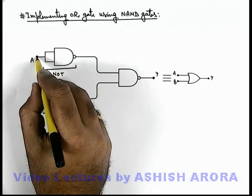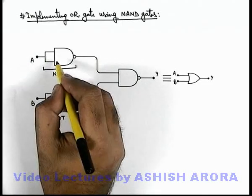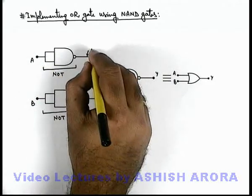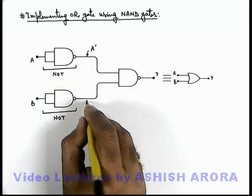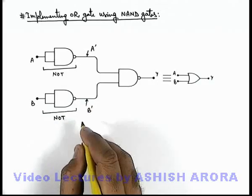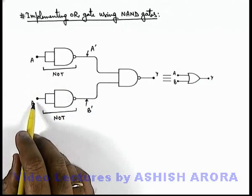So if this is an input signal A applied here, the signal over here will be A prime, and signal here will be B prime. These are the inverted signals corresponding to inputs of A and B.